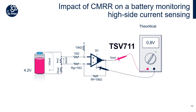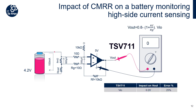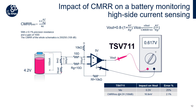But we are not in a perfect world, and errors must be considered. The TSV711, already a precision amplifier, shows a maximum VIO of 200 µV at 25°C, so the output will be 600 mV instead of 800 mV — a 25% error due to VIO. The CMRR due to mismatch of the resistors must also be considered. With four resistors at 0.1% precision and a gain of 1000, we obtain a CMRR of 108 dB. When the battery is fully charged at 4.2 V, the CMRR due to resistance mismatch will add an error of roughly 17 mV on the output.